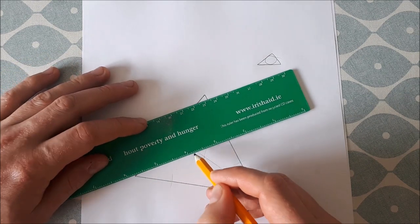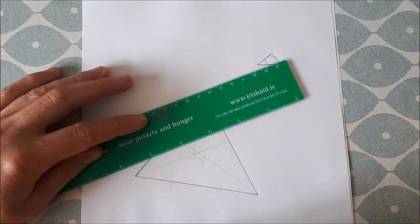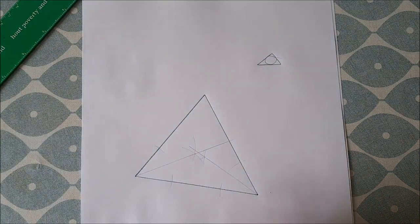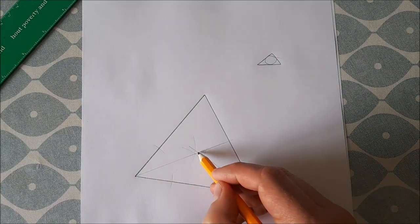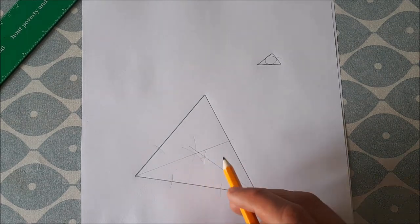Now where these two arcs meet, we join that point to the vertex of the triangle and extend it through. You can see the point of intersection here where our two bisectors of our angles have intersected.